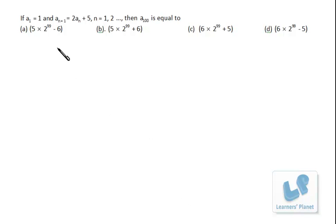Now let's try this problem. If a₁ is equal to 1 and aₙ₊₁ is equal to 2aₙ plus 5 for n is equal to 1, 2, and so on, then a₁₀₀ is equal to...